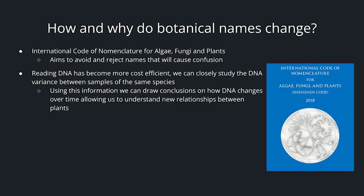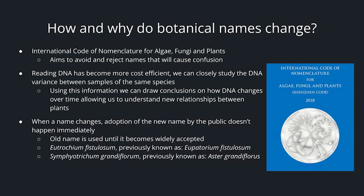How and why do botanical names change? There is an International Code of Nomenclature for algae, fungi, and plants, whose aim is to avoid and reject names that will cause confusion. Reading DNA has become more cost-efficient, so we can closely study DNA variants between samples of species and use that information to draw conclusions on how the DNA changes over time, giving us a better understanding of the relationship between plants. When a name changes, adoption by the public doesn't happen immediately — you may see the old name used until the new one becomes more widely accepted.